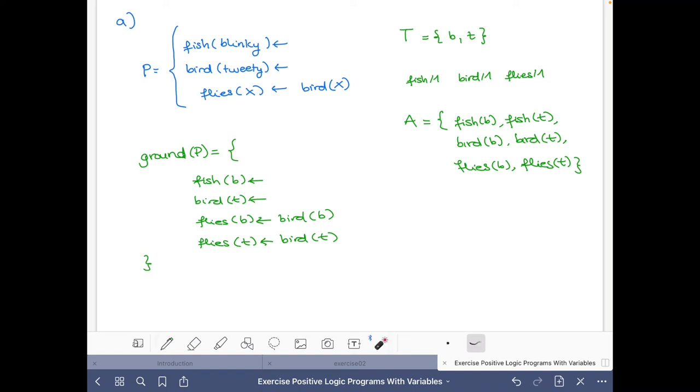Now, we are asked also to find the stable model of this program P. By definition, the stable model of this program P with variables are the stable models of its ground instantiation. So we just have to find the stable models of this ground instantiation to say which are the stable models of P.